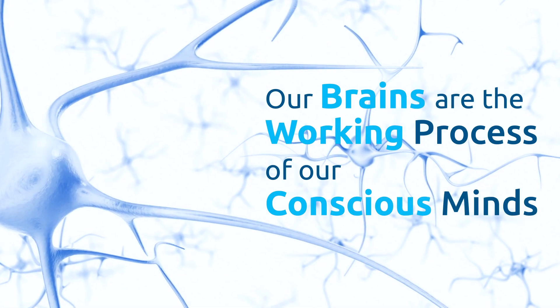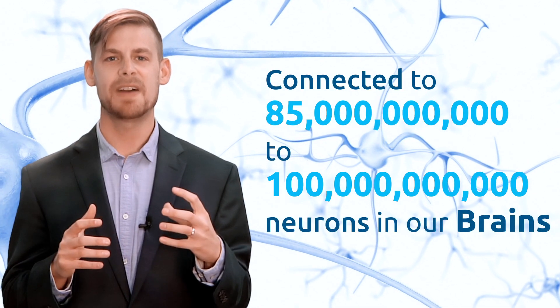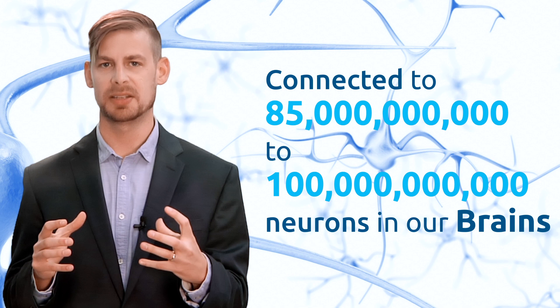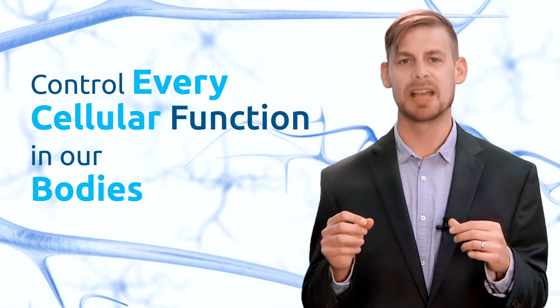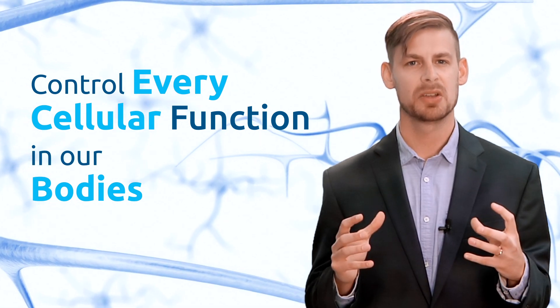Before we can look at the major role that good nutrition has on the health of our brains, we first need to know the difference between our brains and our minds. Our brains are the working process of our conscious minds, which is connected to a network of 85 to 100 billion neurons in our brains.